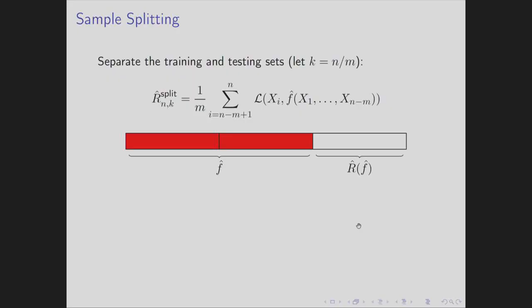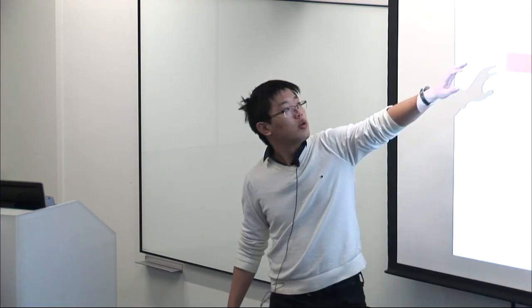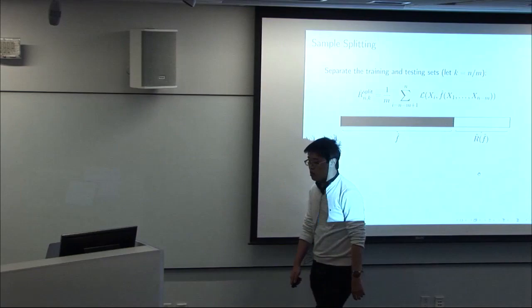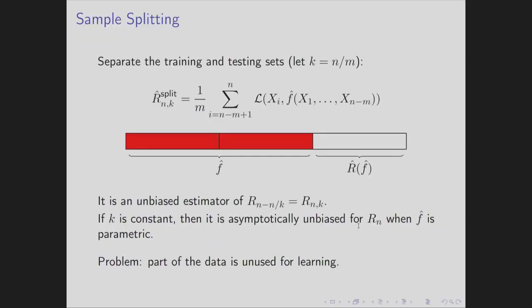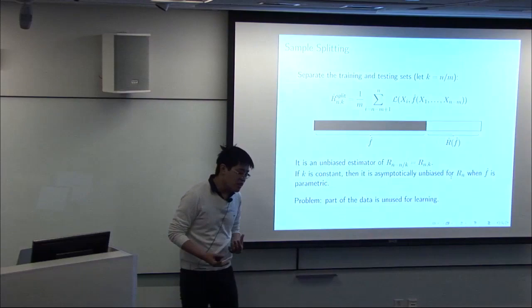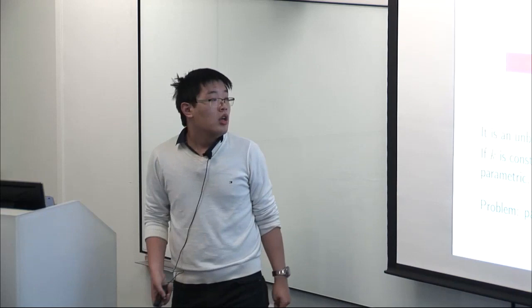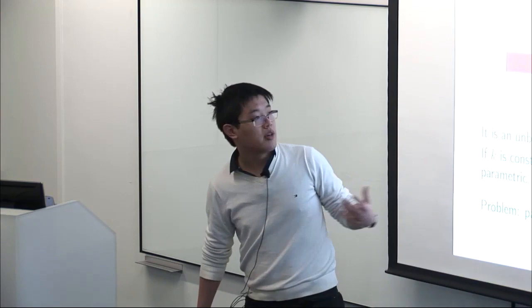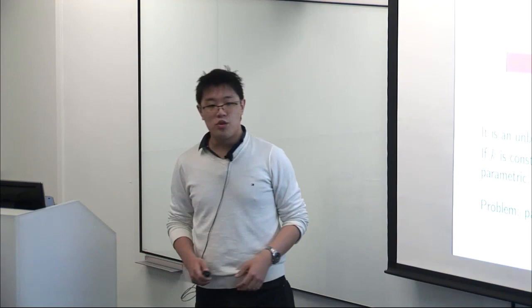To reduce this bias, we do sample splitting: reserve some samples for training and some for testing. The split estimator uses, say, two-thirds of samples for training, obtains the estimator on those, then uses the remaining one-third to compute the risk. This is an unbiased estimator of the risk on two-thirds of your data. If you split a constant proportion and your estimator is parametric, then as n goes to infinity it's asymptotically unbiased for the risk on n data points. The drawback is we give up a portion of data—never using it for estimation—which seems wasteful.